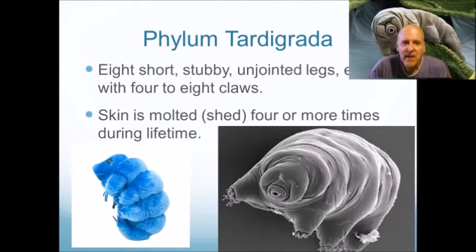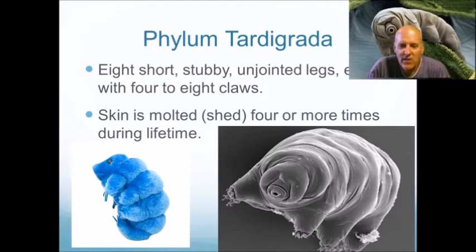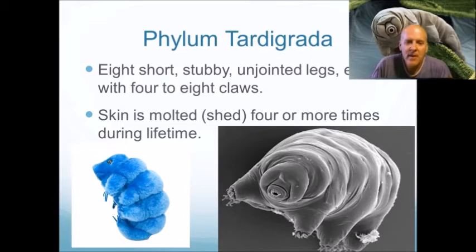Tardigrades have eight short, stubby, unjointed legs, each with four to eight claws. Their skin is molted four or more times during their lifetime. You can actually get plush toys of them.